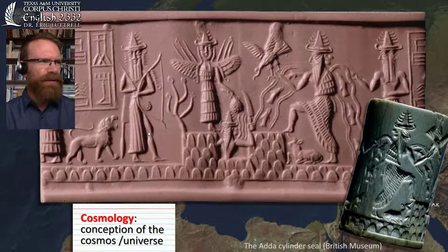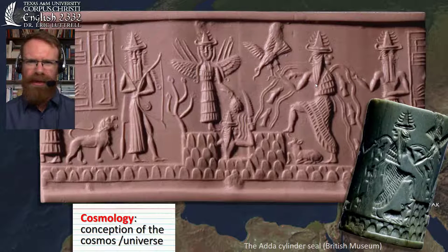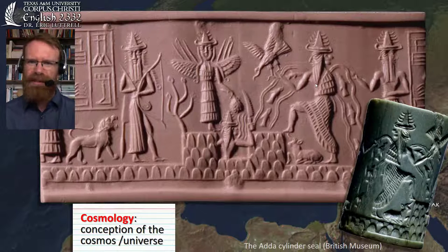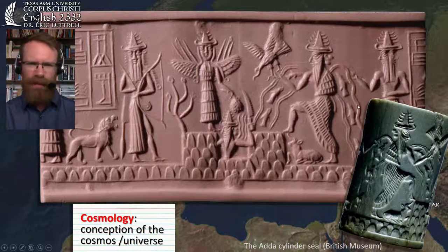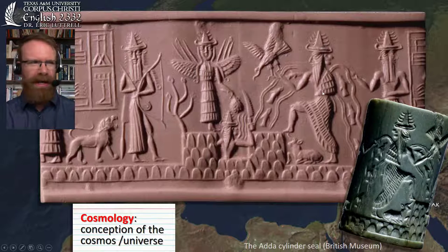On this seal, we can recognize several characters. We have Enki, the god of the water that comes from beneath the earth — the sweet, fresh water, as opposed to ocean water. He has water wings with fish swimming up them. Wherever we see this individual with the horned helmet indicating a god, and these water wings, we know that's Enki or Ea.